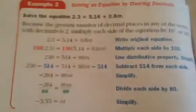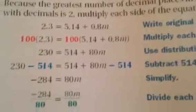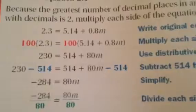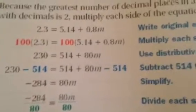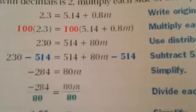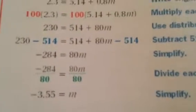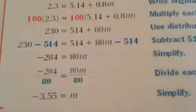Clearing the decimals works basically the same way. You need to count the greatest number of decimal places in any of the terms. In this example, the greatest number of decimal places is 2, so you multiply each side of the equation by 10 squared, or 100. Then you solve normally and you don't have any decimals to worry about. That's the long-term review.